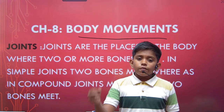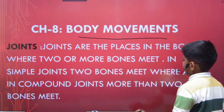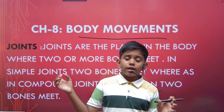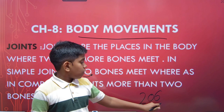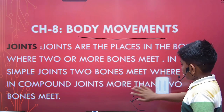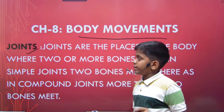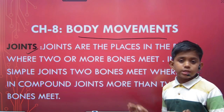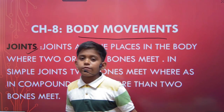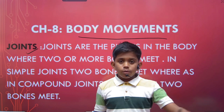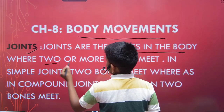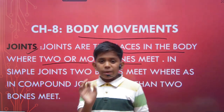First of all we will learn about joints. We have bones in our body — how many? Exactly 206 bones. Small children who are newly born have more than 300 bones in their body, but an adult person has 206 bones. Now, what are joints? Joints are the places in the body where two or more bones meet. Just as two train tracks interact at a junction, two bones interact at a joint. This is the main definition of joints.